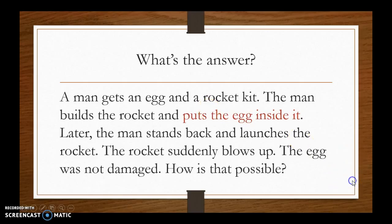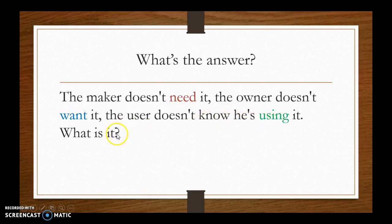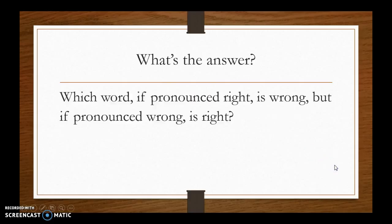Here's another riddle: the maker doesn't need it, the owner doesn't want it, and the user doesn't know he's using it. What is it? The answer is a coffin. The maker of the coffin doesn't need it because he's alive. The owner doesn't want it because someone died. And the user doesn't know he's using it because he's dead.